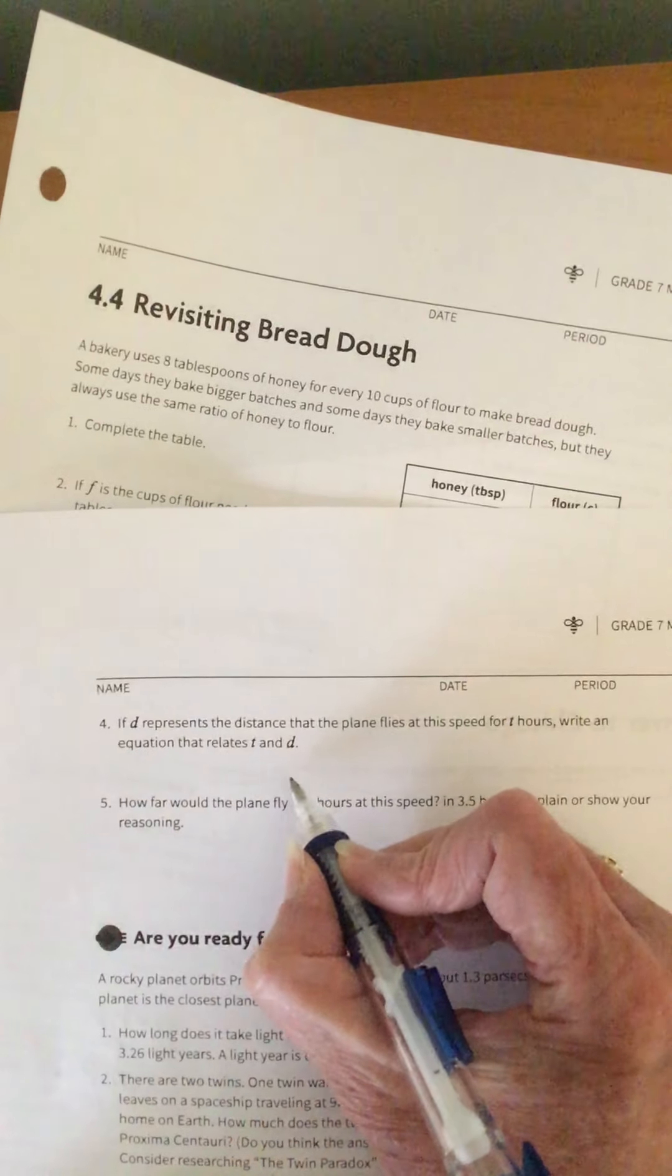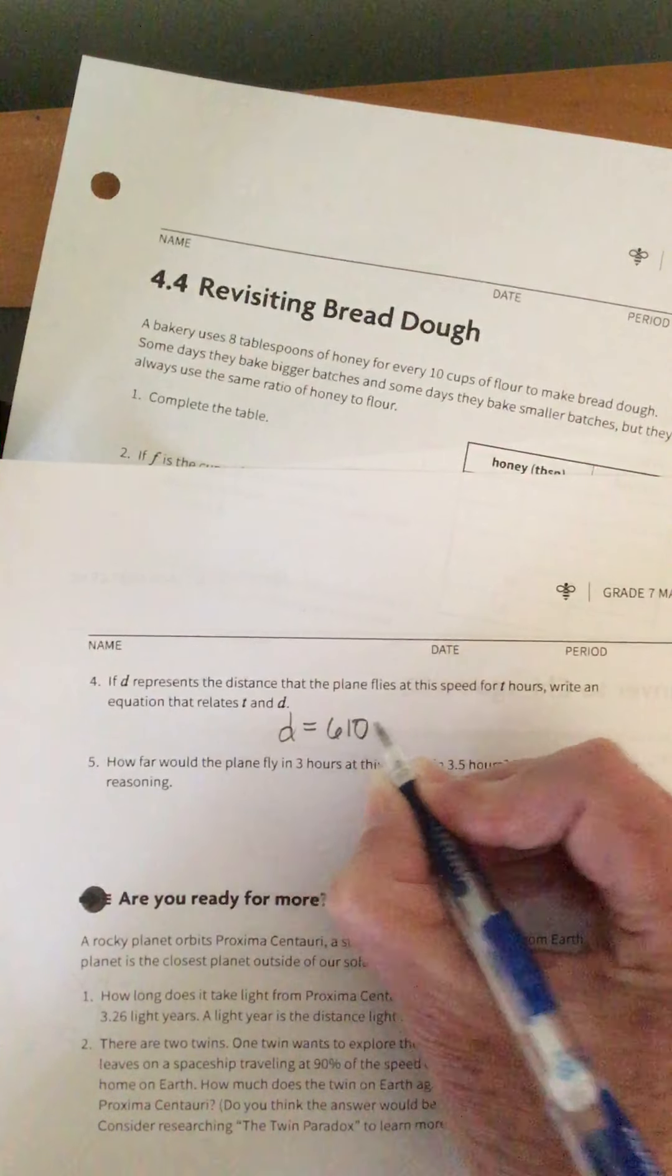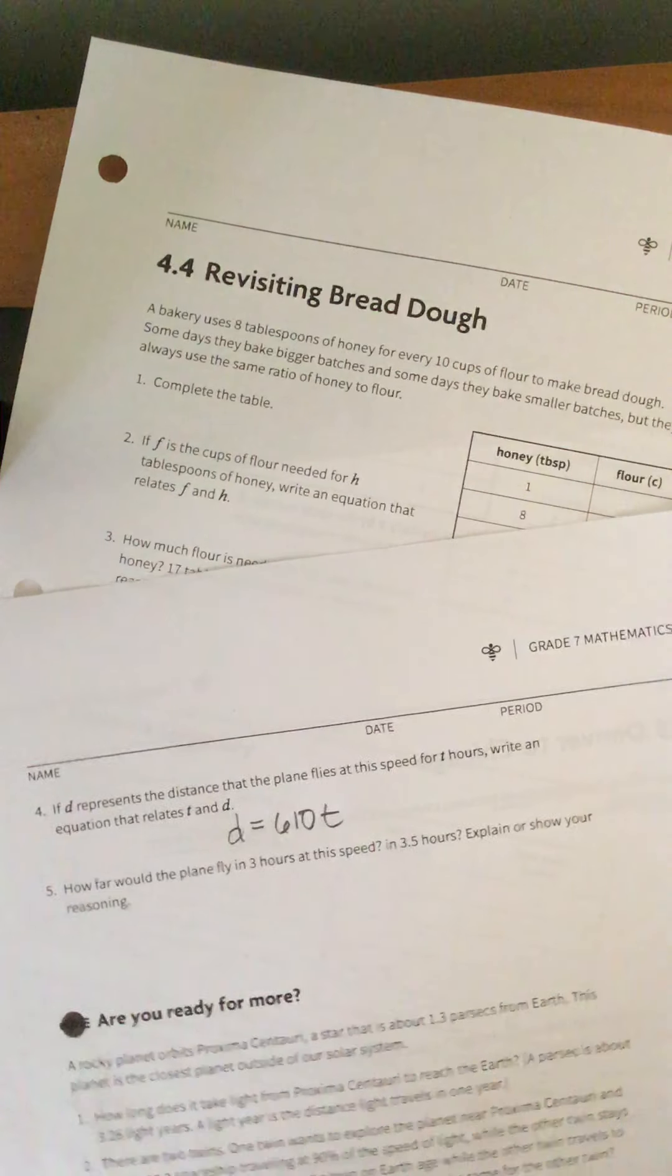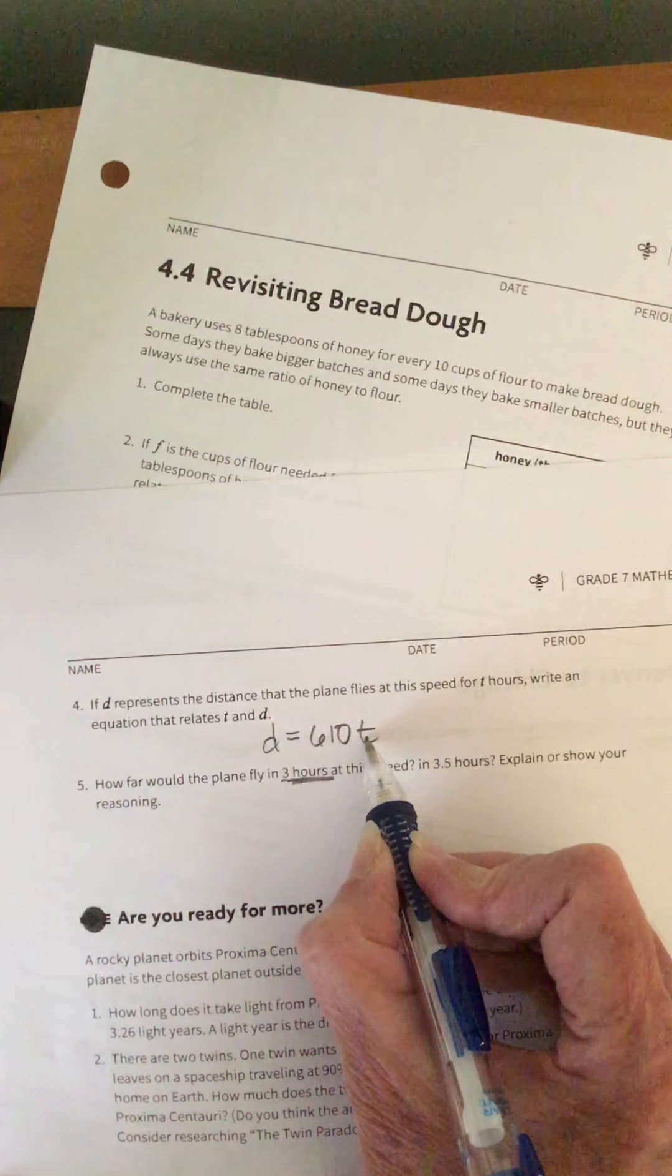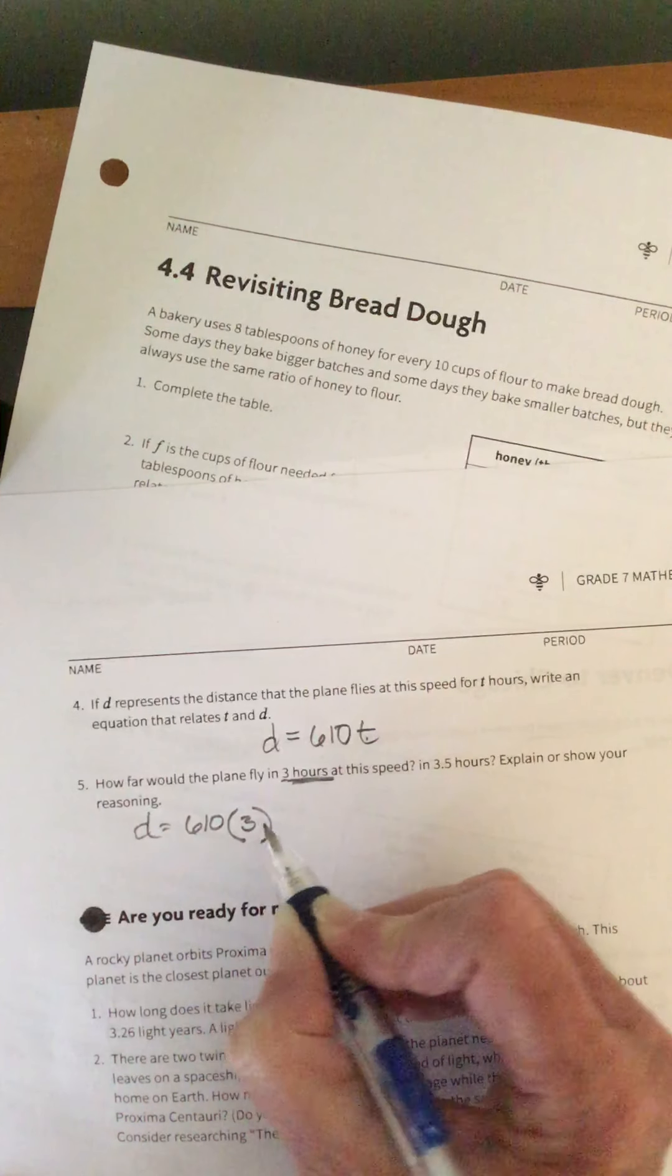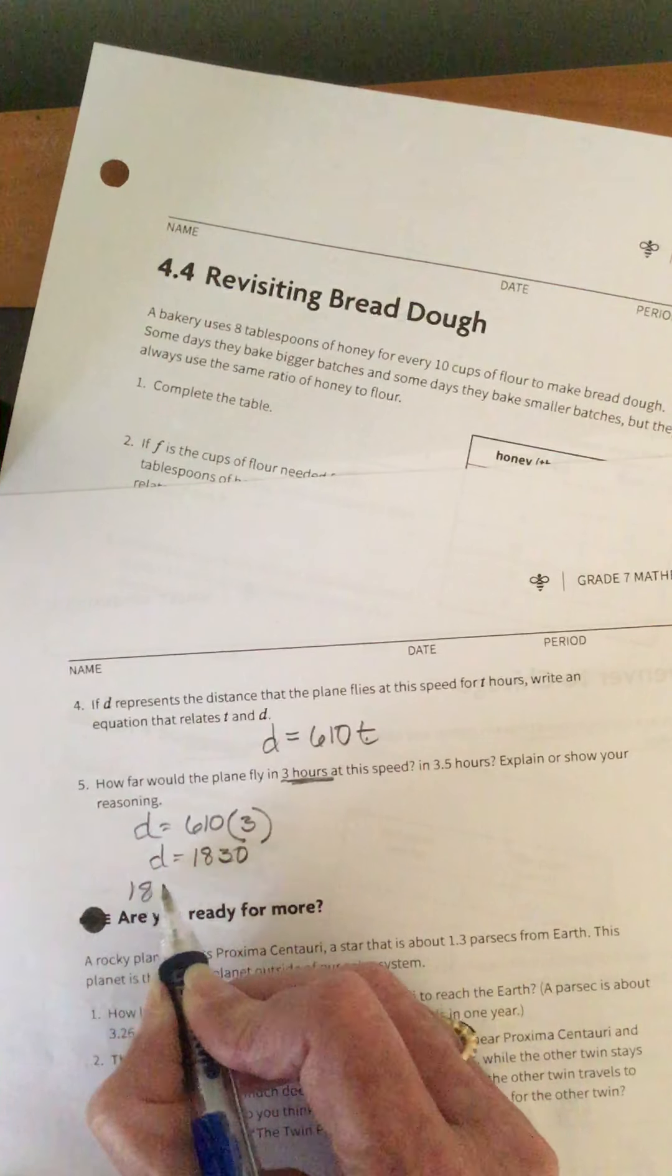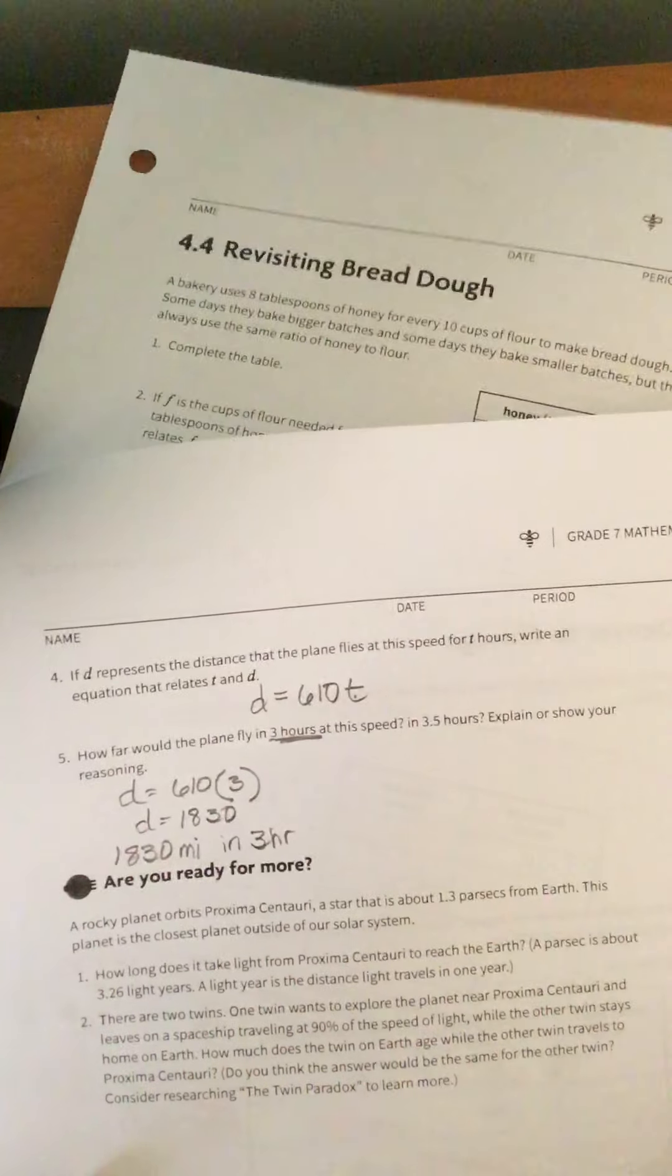So we want it in the form of Y equals KX. So what does Y represent? Y represents the distance. So I'm going to put that first. The distance equals. What was our K? What was our constant? What was our COP? Well, that was 610. So we've got 610. And then our X column was the time. So this is the equation. D equals 610 T. Now, we can use this equation to answer questions without even using a table. By simply plugging in, this is three hours, and hours is represented by T, time. So D would equal 610 times 3. And 610 times 3, so the distance would be 1830. So the plane would have traveled 1,830 miles in three hours.